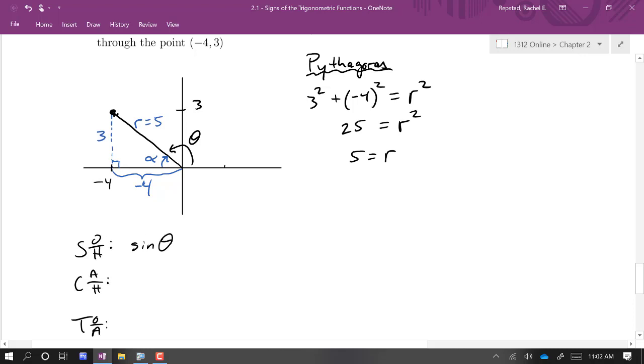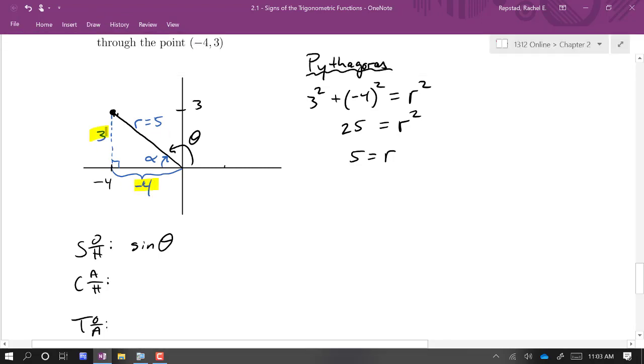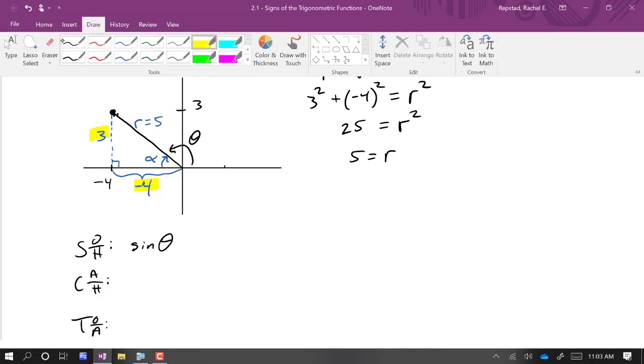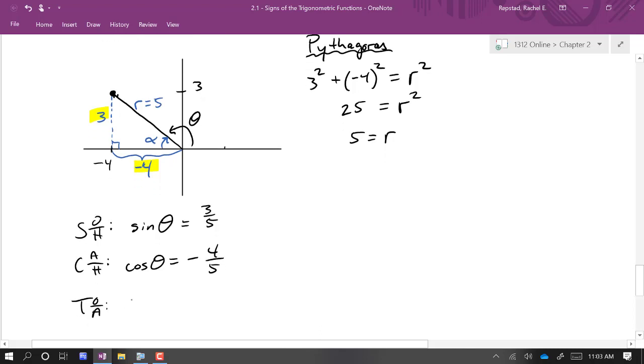So sine of theta. Now we're thinking about this, we're using SOHCAHTOA and thinking about the angle alpha. But as long as I make sure that I've included the signs, like whether or not they're positive or negative on these legs, I'm going to be able to use SOHCAHTOA, and that will actually give me the values for the angle theta, not alpha. Alpha is an acute angle, so everything would be positive for that. But theta is our obtuse angle. So we get, let's see, opposite over hypotenuse is 3 over 5. Cosine theta is negative 4 over 5. And tangent, tan theta opposite over adjacent is 3 over negative 4, or negative 3 fourths.